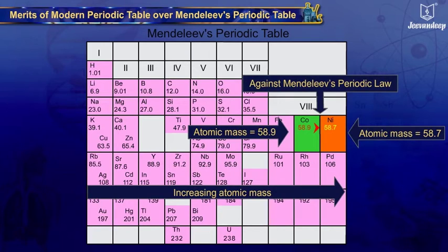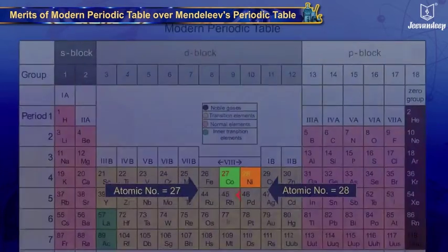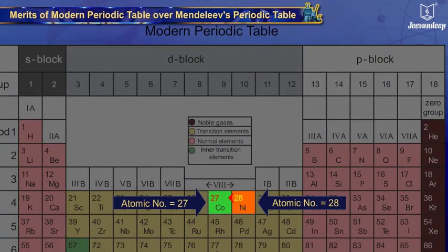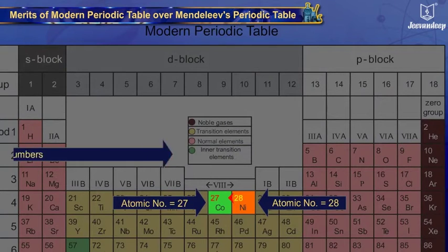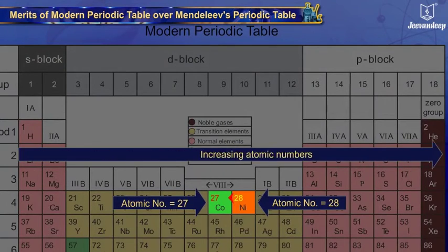This anomaly is corrected in the Modern Periodic Table, as elements are placed according to increasing atomic numbers, not atomic masses.